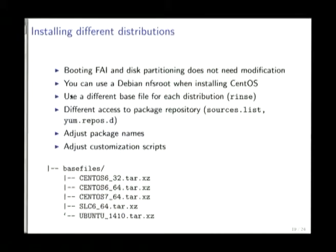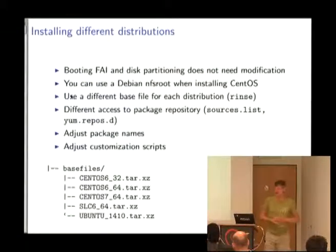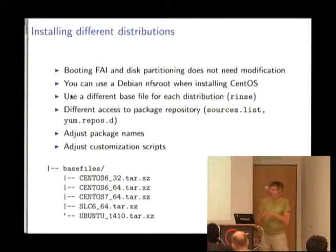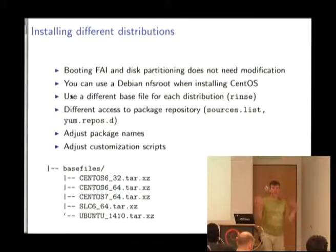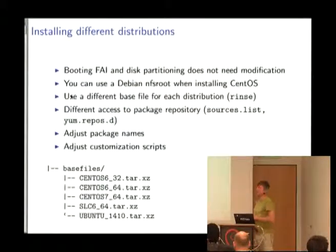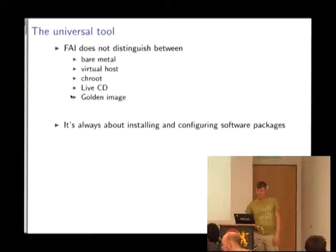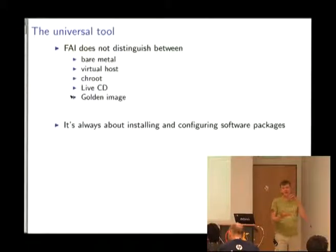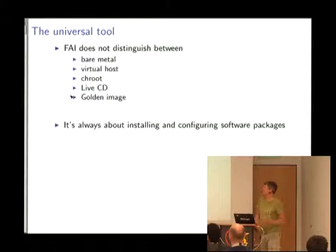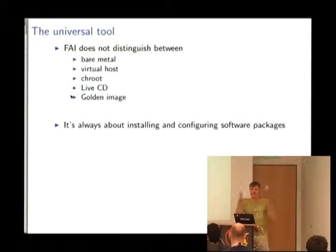What's the difference in FAI when installing a different distribution? The boot process and disk partitioning do not need any modification — FAI doesn't care about the distribution. We can even use a Debian NFS root when installing a CentOS or Ubuntu system. The only things that need to change are how to access the package repository, the package names (for example, CentOS might call it 'apache2'), and the customization scripts. FAI also does not distinguish between installing a bare metal machine, a virtual host, creating a chroot, a live CD, or even a golden image — it always creates some sort of file system, maybe on a disk image, and installs packages into it.